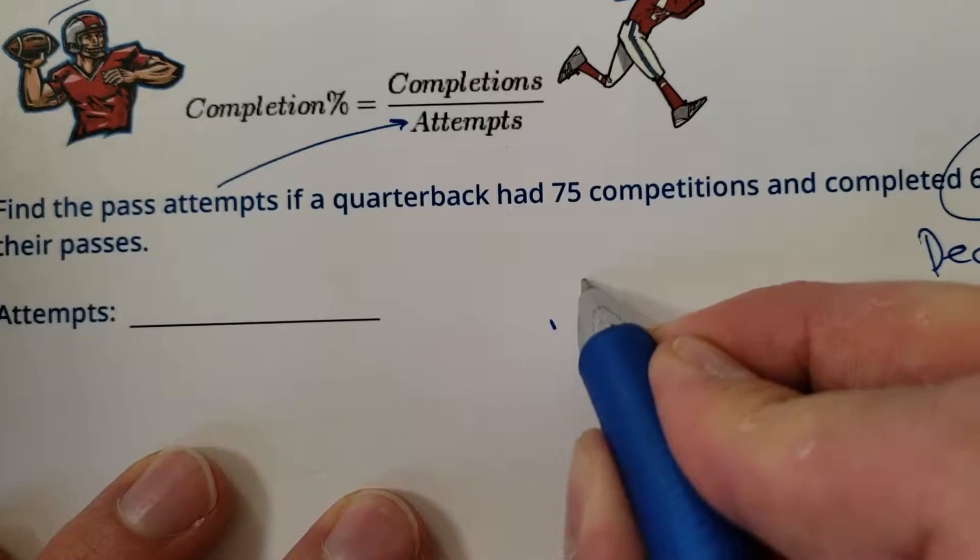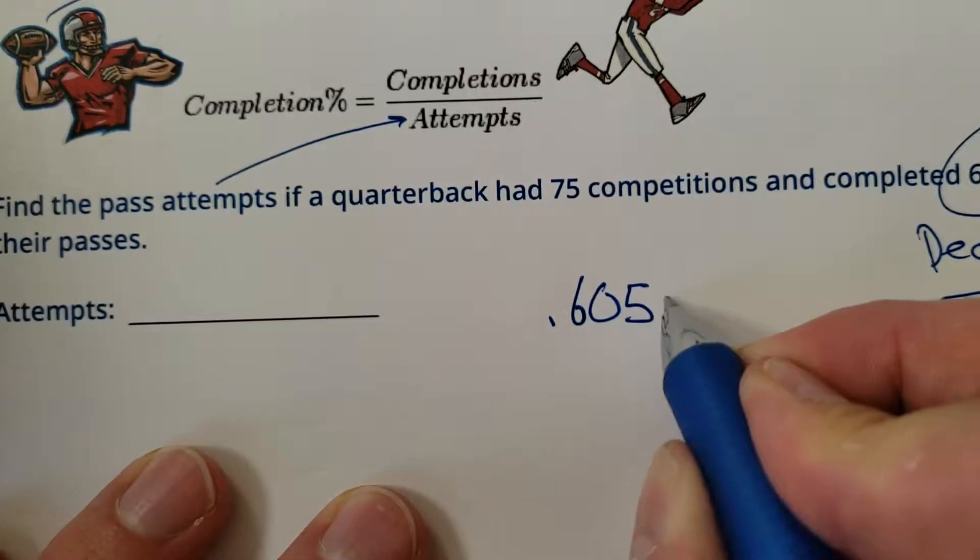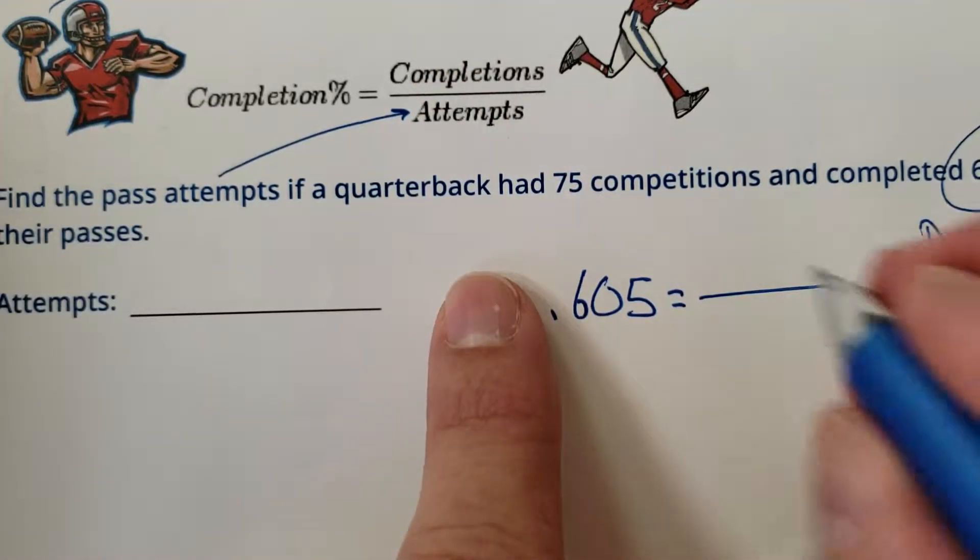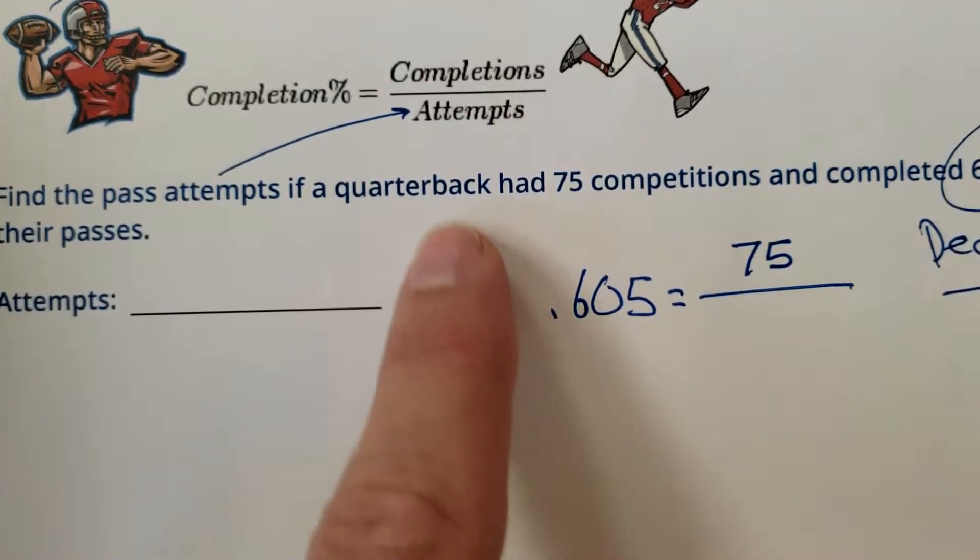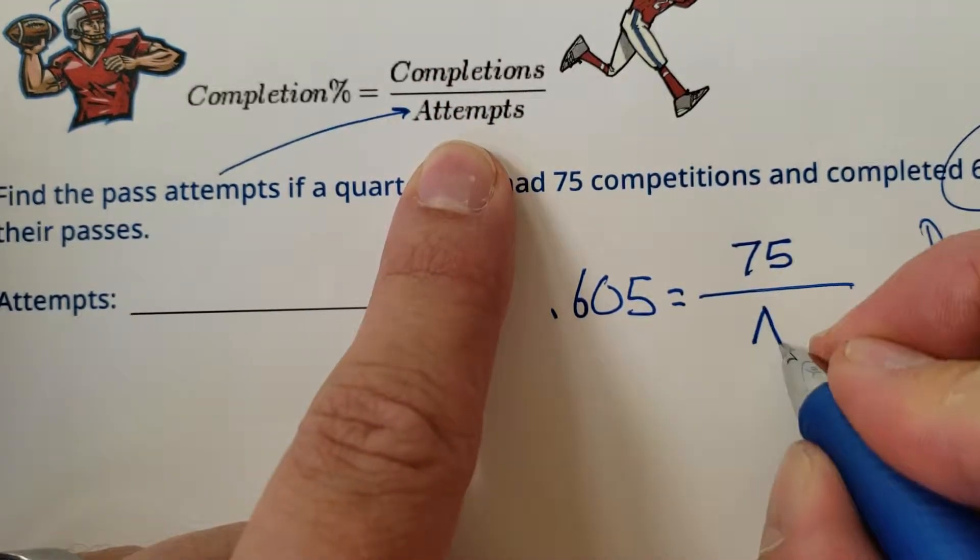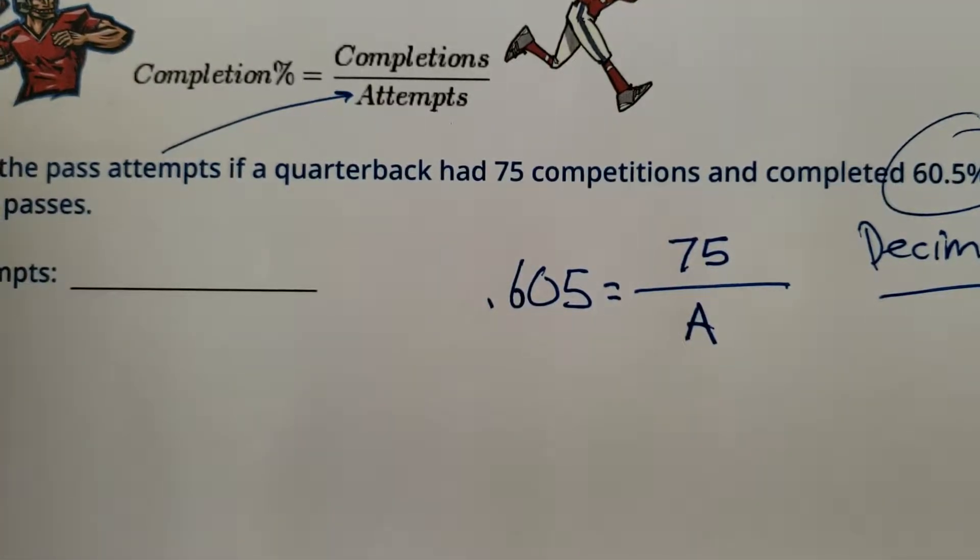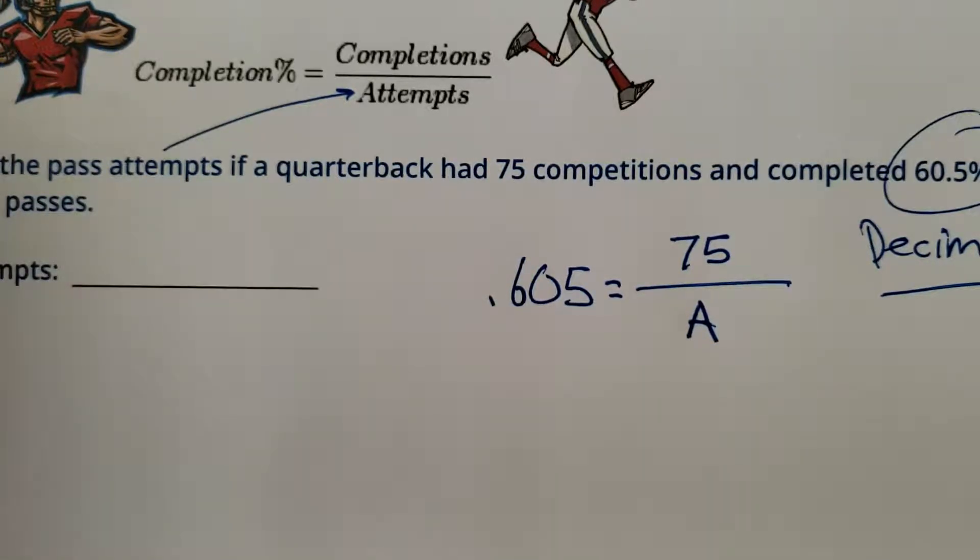So watch this. 0.605 is going to equal 75 completions. So 75 is going to go up here in the attempts. That's what I'm trying to find. 75 over A equals 0.605.